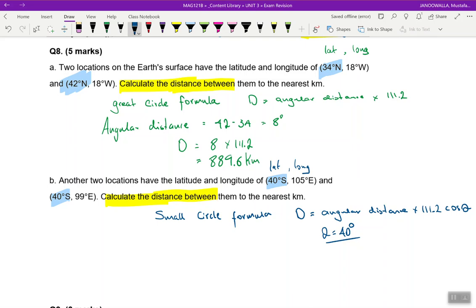In our part b, again we're going to look at, this time we're going to look at the longitudes: 105 east, 99 east, same same subtract. And so in this case we're going to go angular distance is 105 take 99 and that is 6 degrees.